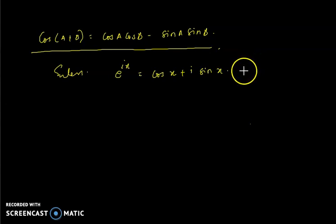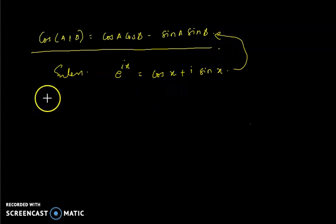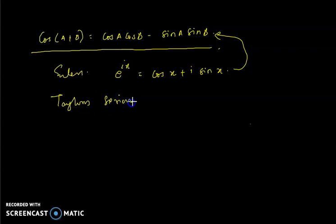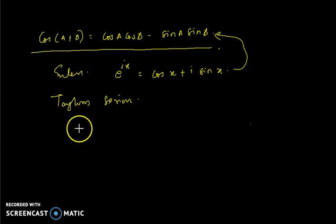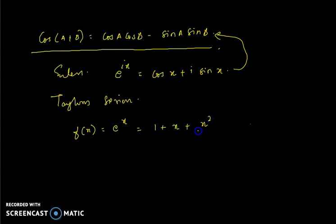Using Euler's formula to arrive at this form, we first need to look at another theorem: the Taylor series. Taylor says that any function can be expressed as a sum of a series. For example, e^x can be expressed as 1 + x + x²/2! + x³/3! + x⁴/4! and so on.